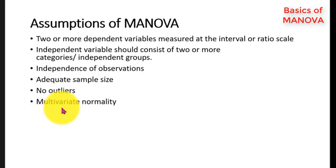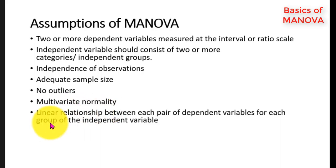There should be multivariate normality in the data set. It means the dependent variables must be normally distributed across each category of independent variable. There should be linear relationship between each pair of dependent variables for each group of independent variable. And there should be homogeneity of variance and covariance matrices.